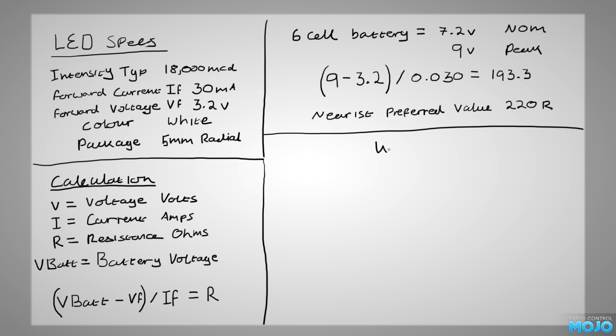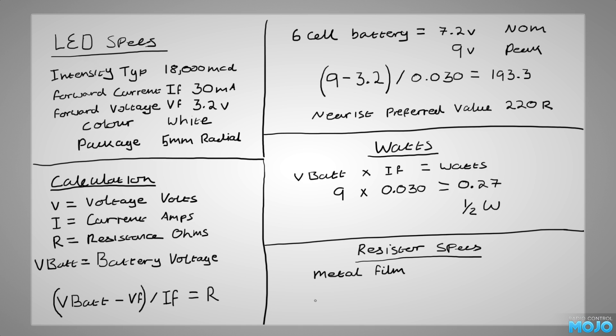The other spec we need is the wattage. For that, all we need to do is multiply VBAT by the forward current. So, 9 times 0.03, which equals 0.27, which is just over a quarter of a watt, so you need to go up to half a watt to be safe. After all that, we end up with a metal film, 220 ohm, half watt resistor. That wasn't so bad, was it?